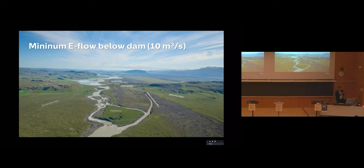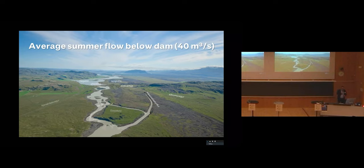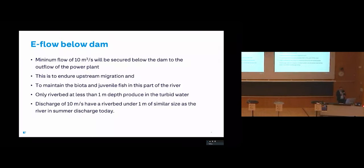But during summer, the average will be around 40 cubic meters per second. This is done to secure the fish migration up to the dam and over the dam, but also to maintain the biota in that part of the river.